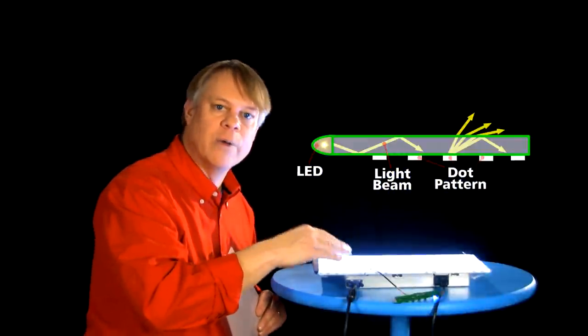And they make some of the light waves emerge out of the front. Then engineers place a diffuser film. It helps eliminate the dot pattern from the light guide plate.